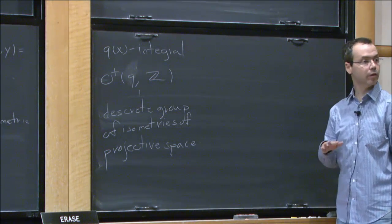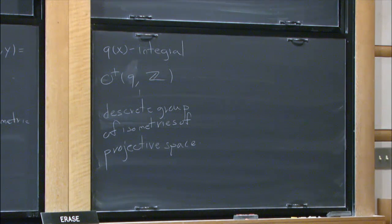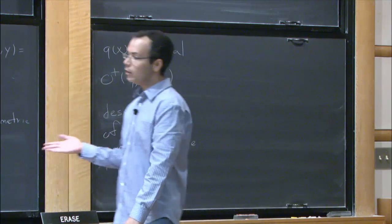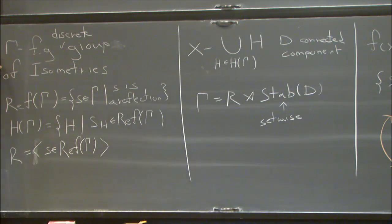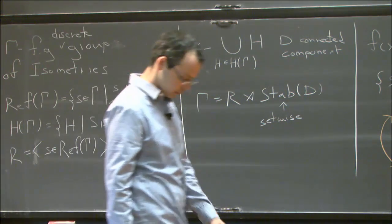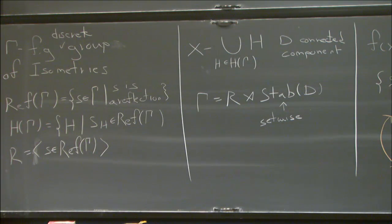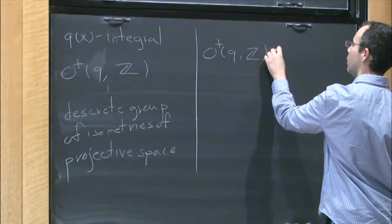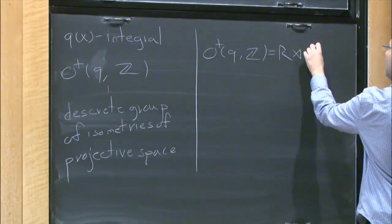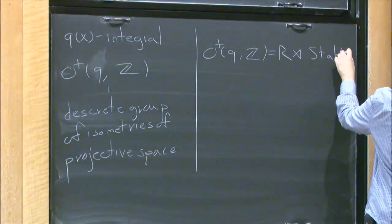Since this is a discrete group of isometries, we can apply the earlier decomposition: it equals the semi-direct product of its reflection subgroup and the stabilizer of some connected component D. So now I can state Vinberg's theorem.